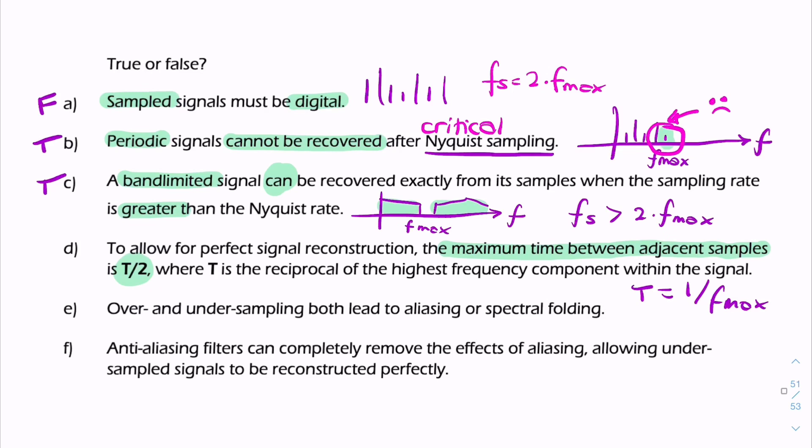So we can write that out. If fs has to be greater than twice f max, that means that ts has to be less than 1 over 2 f max, which is like saying t over 2. So that's true.